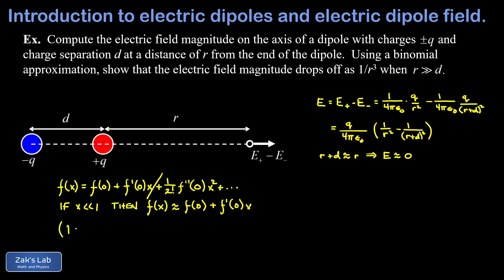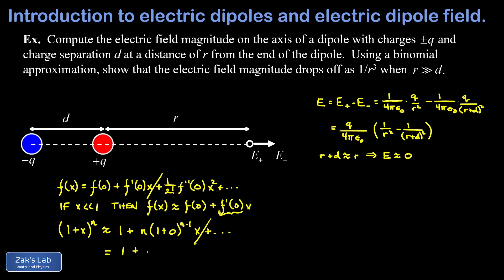The binomial approximation concerns the function one plus x to the nth power. Applying the linear Taylor approximation, we evaluate at x equals zero to get one, and the derivative n times one plus x to the n minus one evaluated at zero gives n. So the result is that one plus x to the nth power is approximately equal to one plus nx, provided x is very small. This is a super useful result to remember in physics.